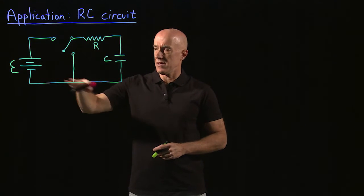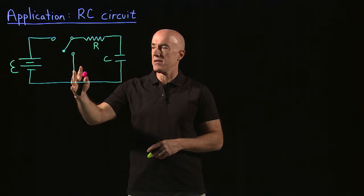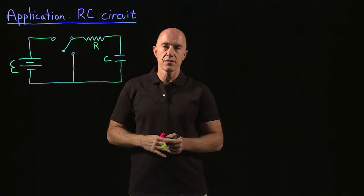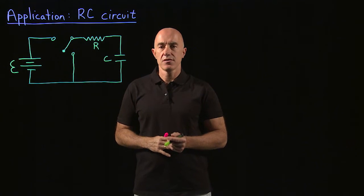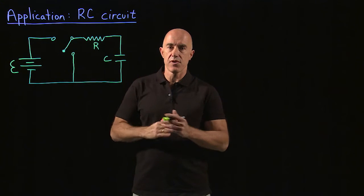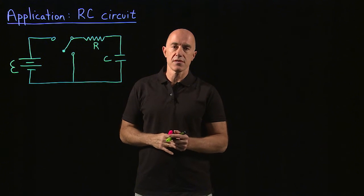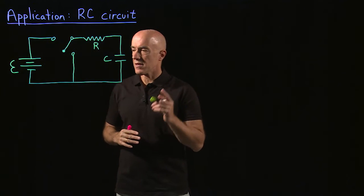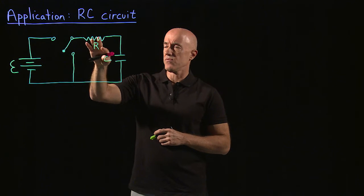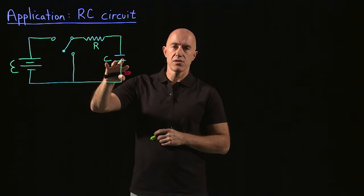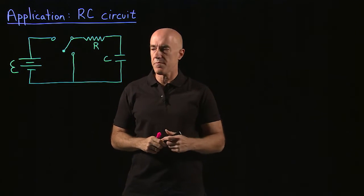The charge on the capacitor, the current in the circuit, and the voltage across the capacitor are governed by a differential equation. So let's derive that differential equation and then solve it for the voltage across the capacitor. We need to know the equations governing the voltage across a resistor and the voltage across a capacitor — that basically defines what a resistor is and what a capacitor is.